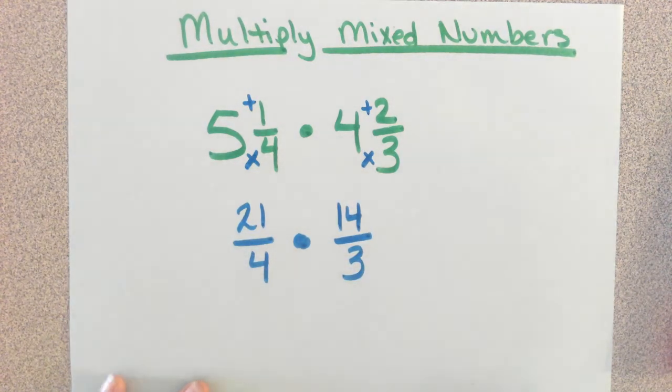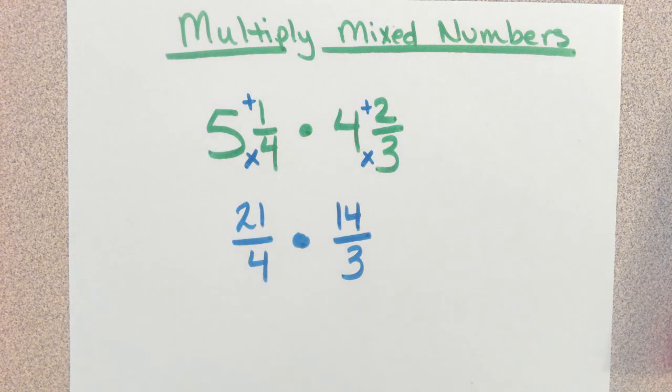Now, if I multiply these fractions out, it's going to be a pretty big number, and then I have to reduce at the end. So we're going to use our handy-dandy cross-reducing to make our life a little easier.